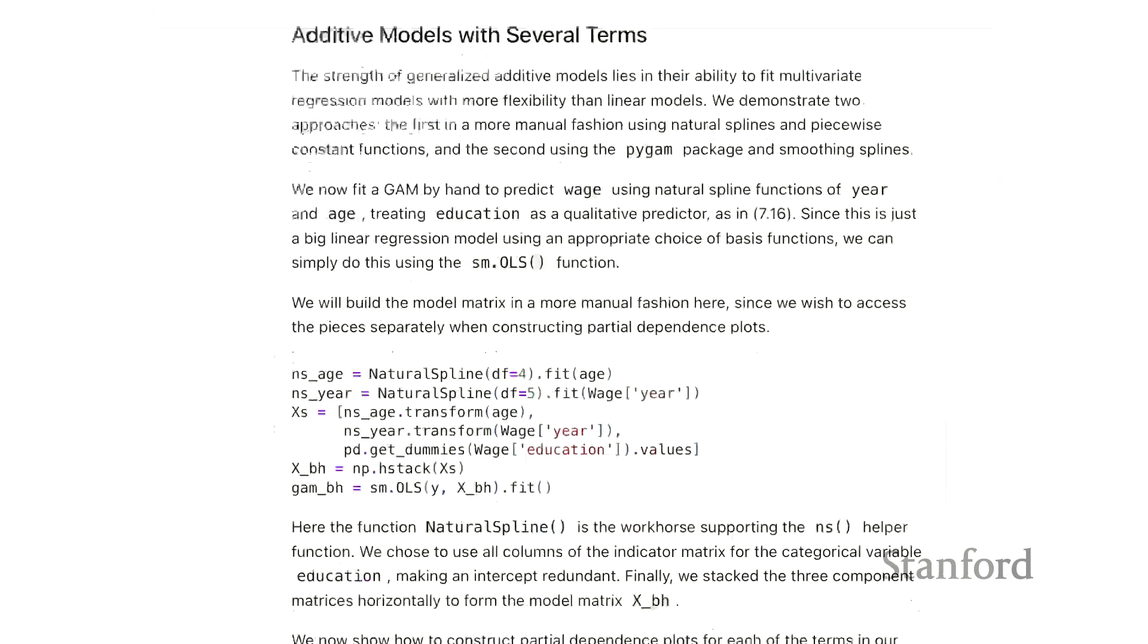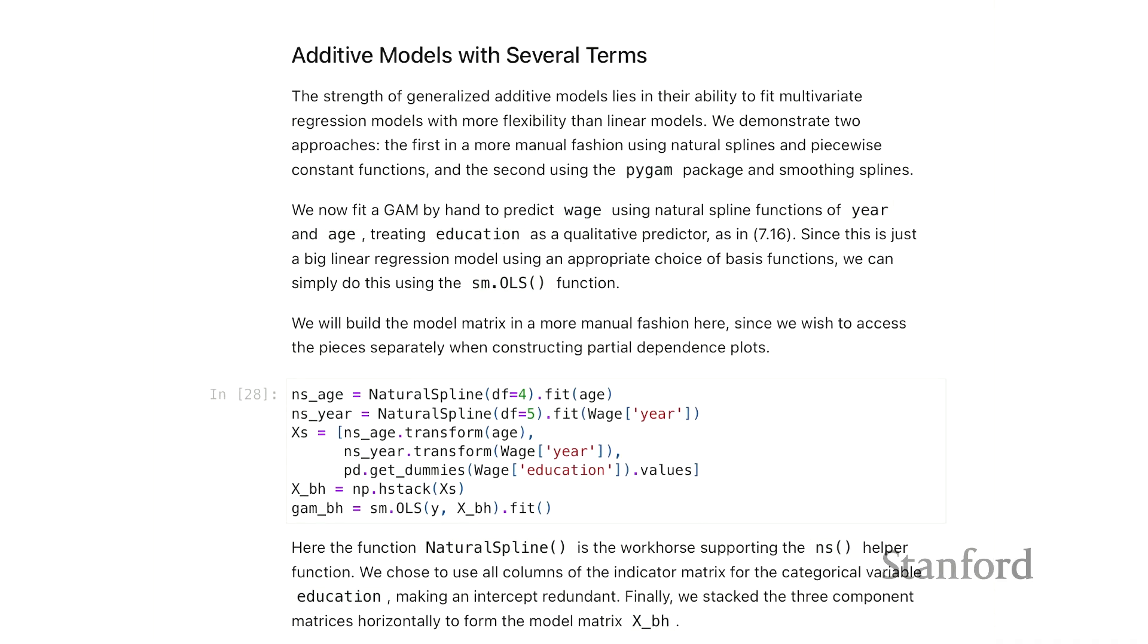So the first model we're going to fit with more than one feature is not strictly a GAM, but it's going to include splines for the wage as a function of age and a function of year. We're going to fit natural splines for both of these with different degrees of freedom, and we'll use ordinary least squares regression as we had above for the natural spline and B spline fits.